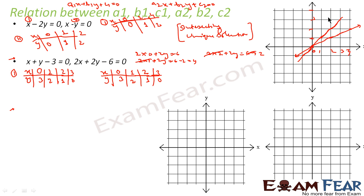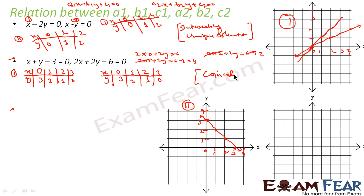So I plot equation 1 and equation 2. The points are (0,3), (1,2), (2,1), (3,0) — same for both equations. When you draw both lines, you can see that both lines are overlapping. They are coincident and have infinite solutions. Please make a note of this: coincident lines mean infinite solutions.